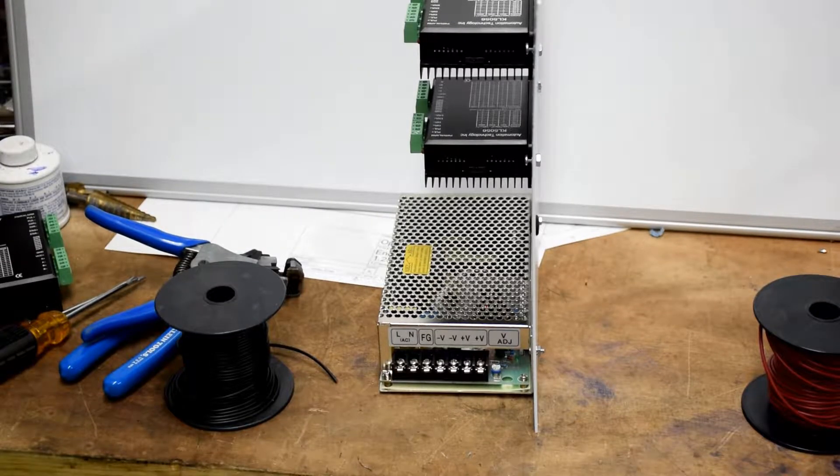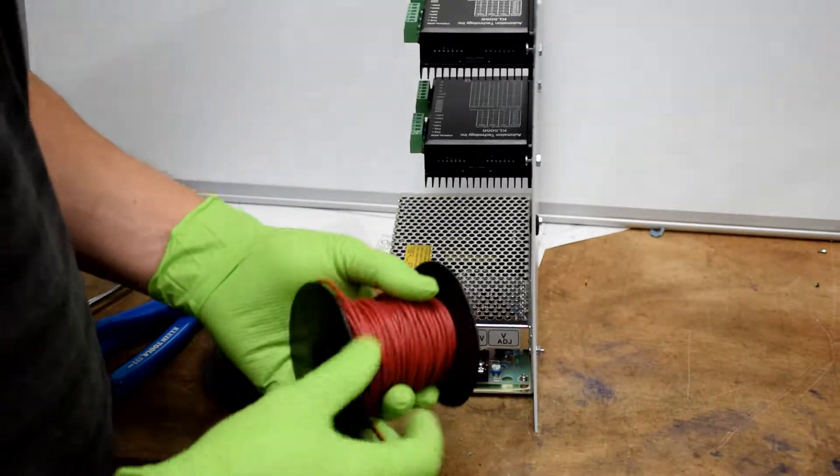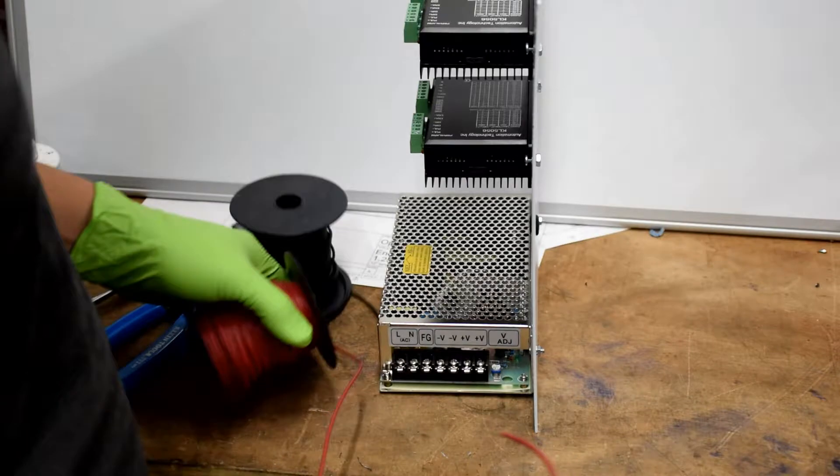Now that we've got our electrical components mounted on the backplate, it's time to start doing some wiring. This can all be done in the panel, but I thought I'd get a couple wires out of the way while it's out in the open.